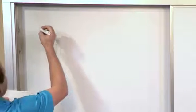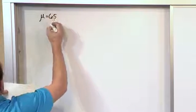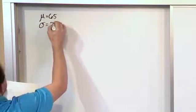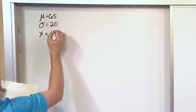So what we want to do is, let's say we have a regular normal distribution with a mean of 65, with a standard deviation of 20, and let's say we have some x value that we care about here that's 40.